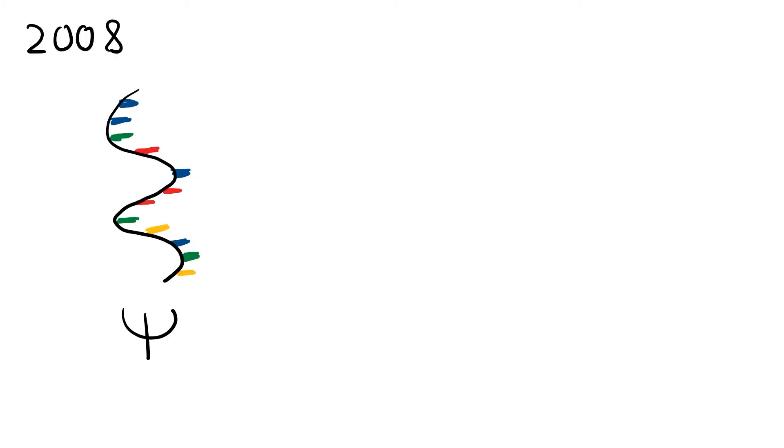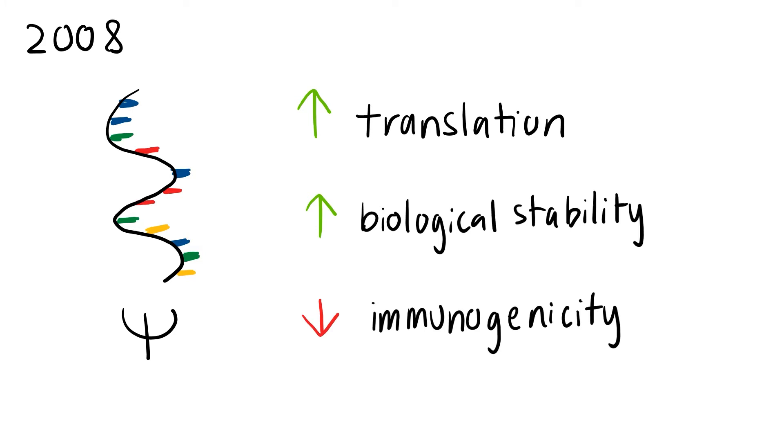In 2008, incorporating pseudouridine into in vitro transcribed mRNA was demonstrated to increase translation and biological stability in addition to reducing immunogenicity, addressing the problems of mRNA use therapeutically. The translation inhibitory effect was suggested to be due to RNA-dependent protein kinases, or PKR, as it was only observed in cells containing PKR.